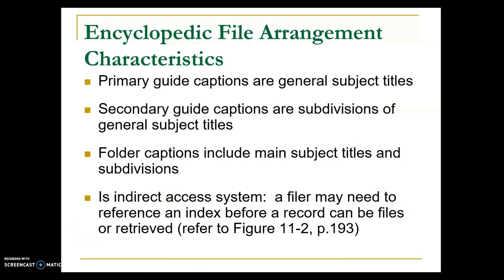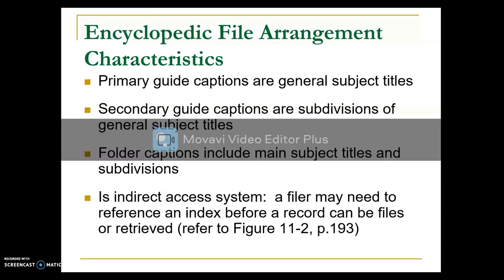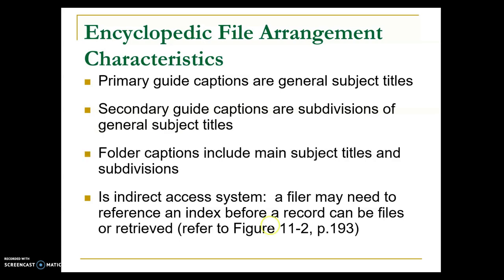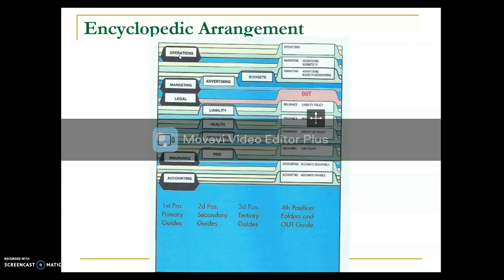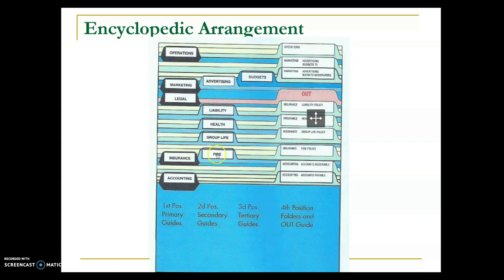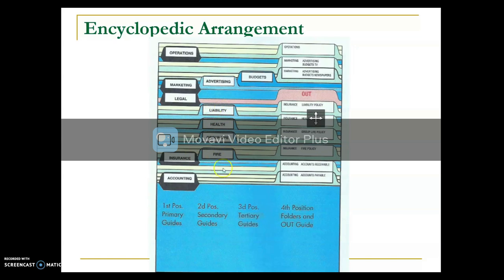The encyclopedic file arrangement is an indirect access system, meaning the filer or staff may need to refer to the index before finding the required record. All guides are labeled with the full name of the subjects. For example, under Insurance, the secondary cards include Fire Insurance, Group Life Insurance, Health Insurance, and Liability Insurance — representing more specific topics within the Insurance subject.